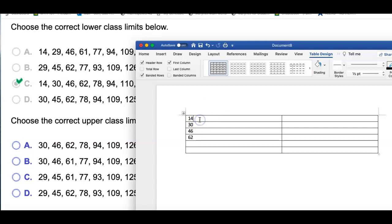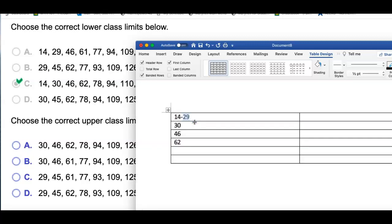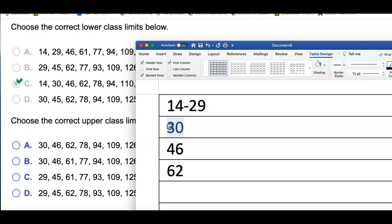So the upper class limit has to be 1 less than 30. I'll say 14 is going to 29, and I got 29 because it's 1 less than 30.